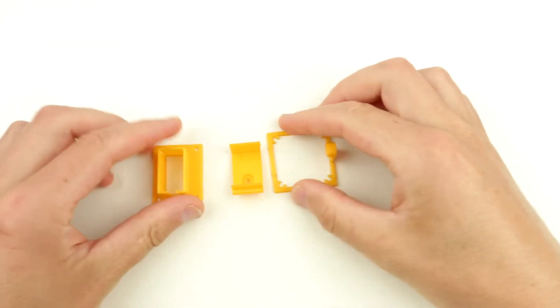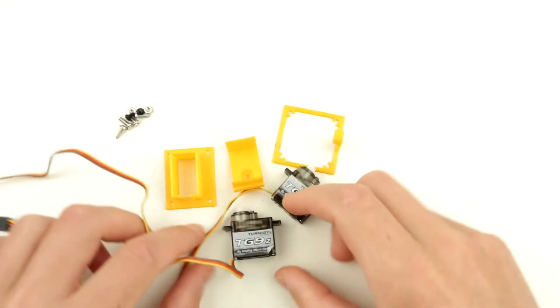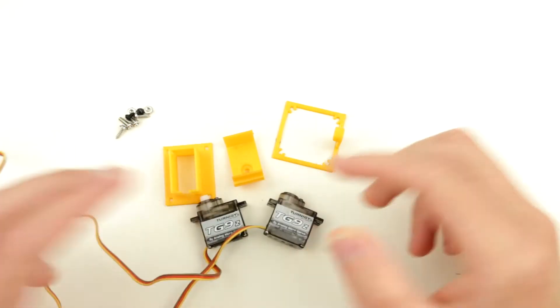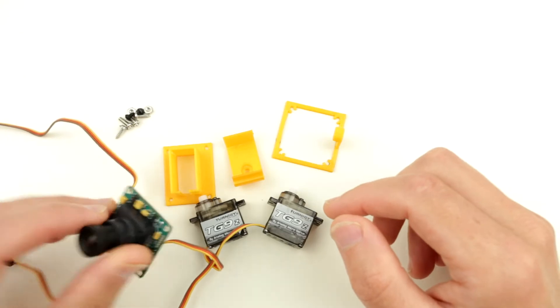Alright, to put this micro gimbal together I need a bunch of screws over here, I've prepared them. I need obviously two micro servos, this hobby micro servo from Turnigy or from Hobby King and the camera module over here.